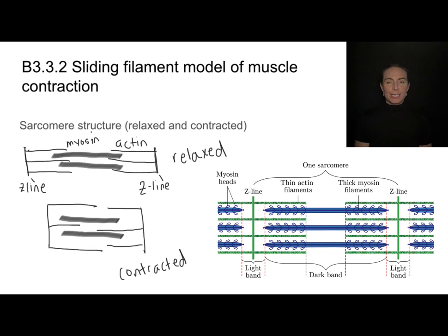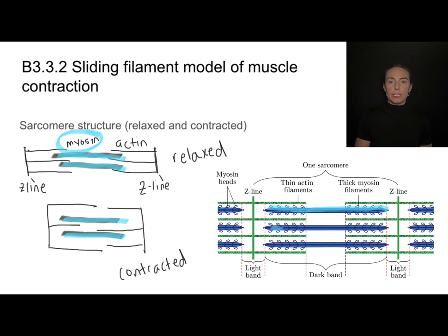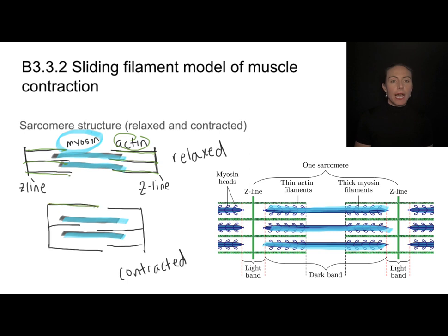Here in the diagram, the myosin filaments are shown in blue — this thick filament in the center that stays in one place. The actin filaments are thinner, attached to the z-lines on the outside. During a muscle contraction, the actin filaments swing and slide in closer to the center.